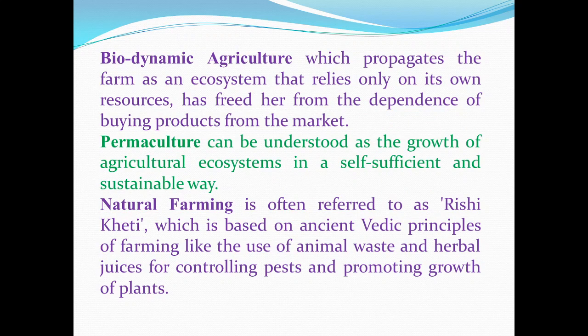Biodynamic agriculture propagates the farm as an ecosystem that relies only on its own resources, freeing it from dependence on markets. Permaculture can be understood as the growth of agricultural ecosystems in a self-sufficient and sustainable way. It offers viable solutions to the deep crisis farmers face in a country where more than 80% of agricultural holdings are under 2 hectares.